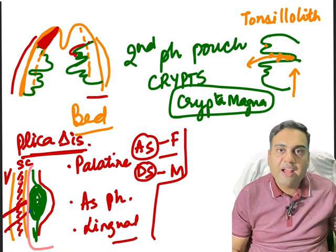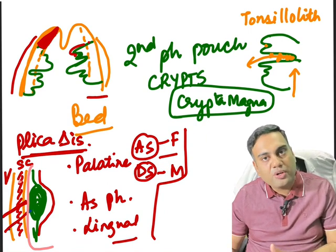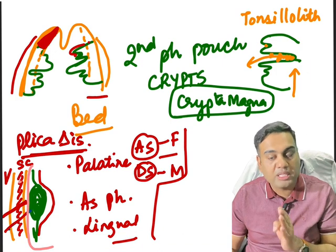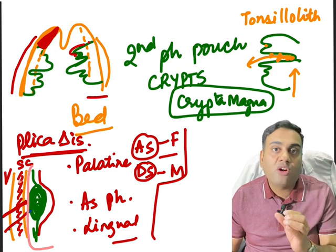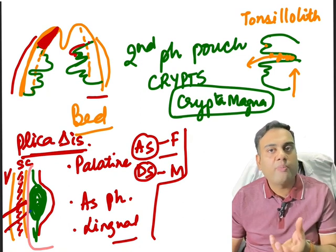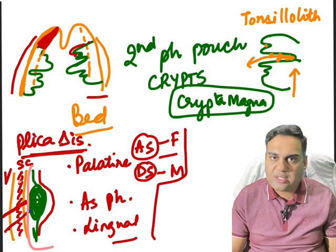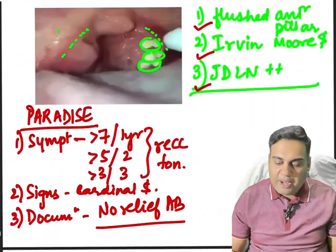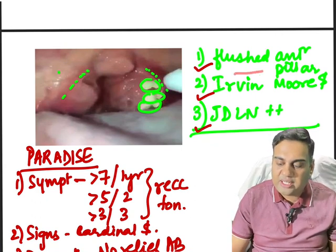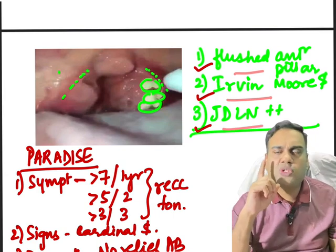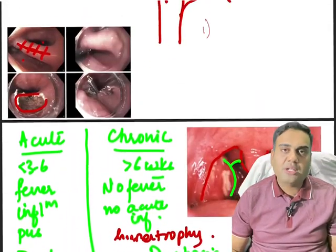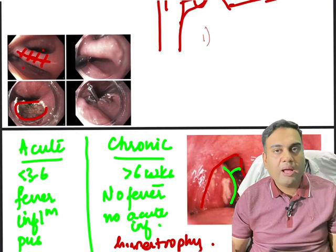To summarize: the most common bacteria causing tonsillitis is beta-hemolytic Streptococcus; drug of choice is the penicillin group — amoxicillin and clavulanate combination. Paradise criteria: more than seven infections in one year. Three cardinal signs: flushed anterior pillar, Irvin-Moore sign, and jugulodigastric lymph nodes. Irvin-Moore sign — when you press on the tonsil, cheesy material comes out from the crypts.